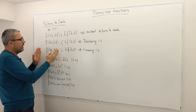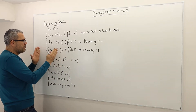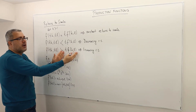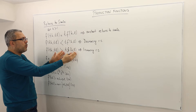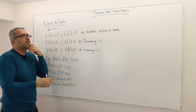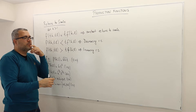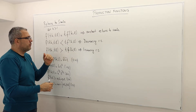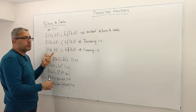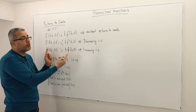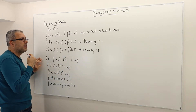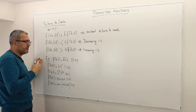Intuitively, if I multiply my inputs by t but the output is more than t times my initial output level, and if this is true for every t — that's also important — then I call my production function increasing returns to scale.